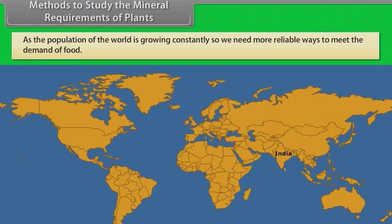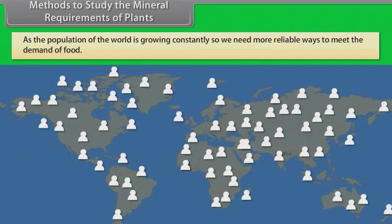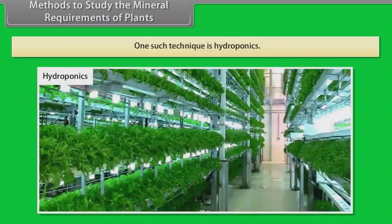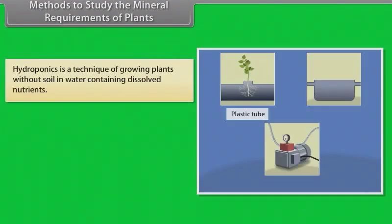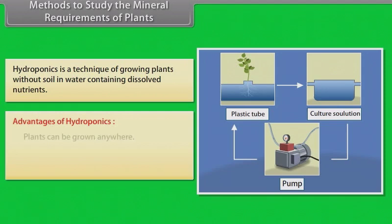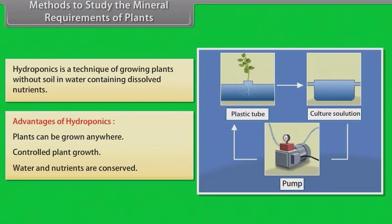Methods to study the mineral requirements of plants: As the population of the world is growing constantly, we need more reliable ways to meet the demand for food. One such technique is hydroponics. Hydroponics is a technique of growing plants without soil, in water containing dissolved nutrients. Advantages of hydroponics: plants can be grown anywhere, and plant growth, water, and nutrients are conserved.